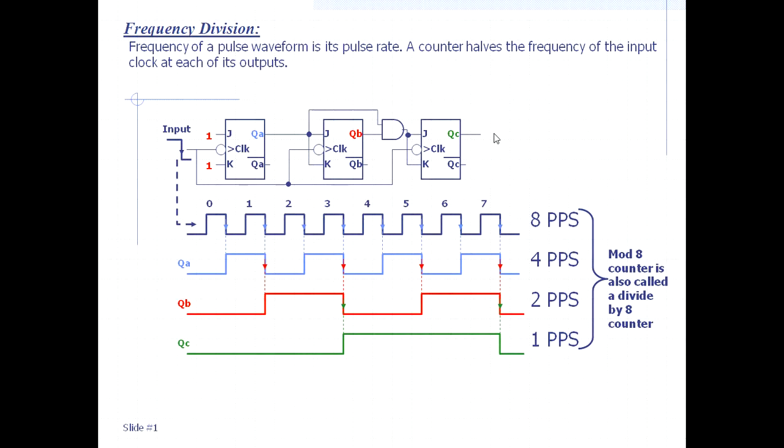So we say this is a mod-8 counter, so it actually divides by 8. A mod-8 counter is also called a divide-by-8 counter because this pulse per second - this is PPS, pulse per second.